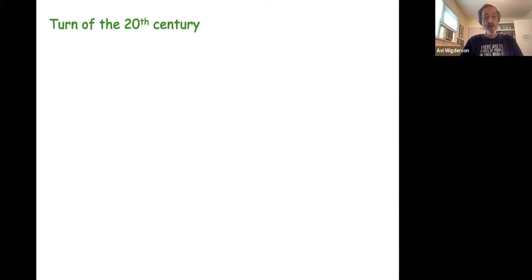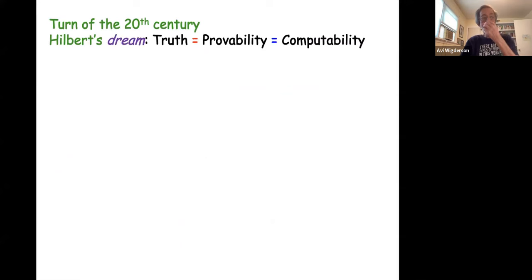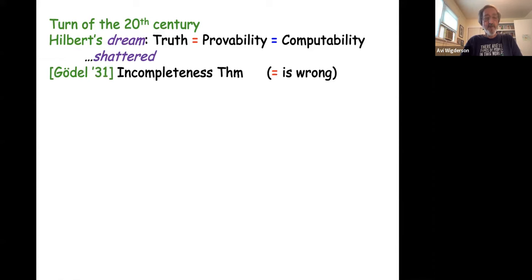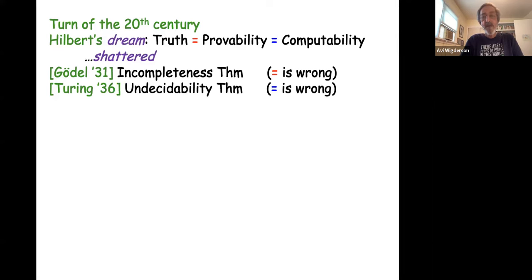Jumping two centuries ahead: Hilbert believed that what happens in plane geometry should happen everywhere in mathematics—that truth is the same as provability, and everything provable can be computed. As you know, this dream was shattered during his lifetime by Gödel, who proved the incompleteness theorem, showing that there are things that are true but cannot be proved in axiomatic systems. Then Turing showed that there are provable things that are not computable.